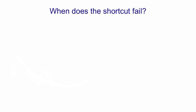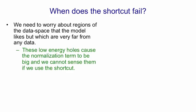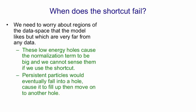This shortcut of only doing one full step to get the reconstruction fails for places that are far away from the data. We need to worry about regions of the data space that the model likes but which are very far from any data point. These low energy holes cause the normalization term to be big and we can't sense them if we use the shortcut. If we used persistent particles where we remembered their states and after each update we updated them a few more times, then they would eventually find these holes. They'd move into the holes and the learning would cause the holes to fill up.